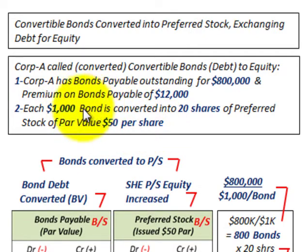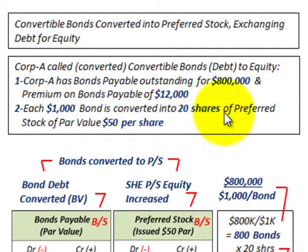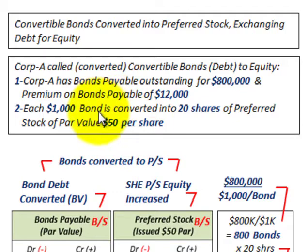Each bondholder holding a $1,000 bond is going to receive 20 shares of preferred stock with a $50 per share par value. They're going to have $1,000 in bonds and receive a like share amount in preferred stock — a par value of 20 shares times $50 per share equals $1,000. The company is converting the bond debt into equity.